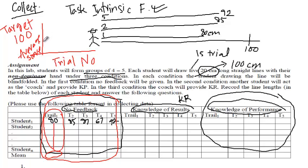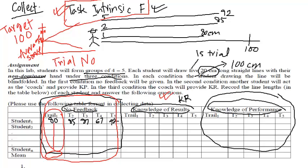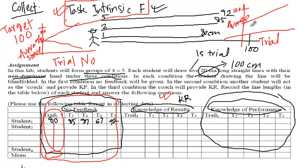If the average target is 100 and the graph starts from 80 and trends upward toward 100, you can understand that task intrinsic feedback is working. If it stays flat or decreases, they're not improving through task intrinsic feedback. The same applies to knowledge of results — you have a separate graph with trial numbers on the x-axis and average for knowledge of results on the y-axis, with the target at 100 centimeters. If the line trends upward they're improving; if not, knowledge of results is not working.